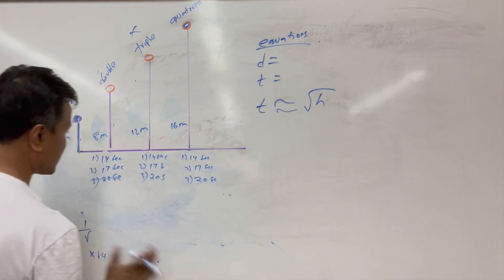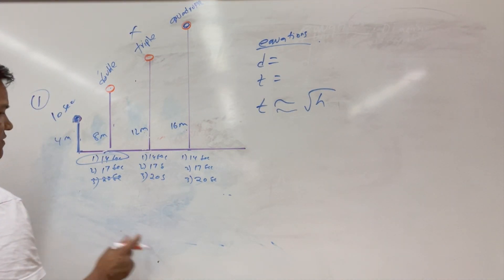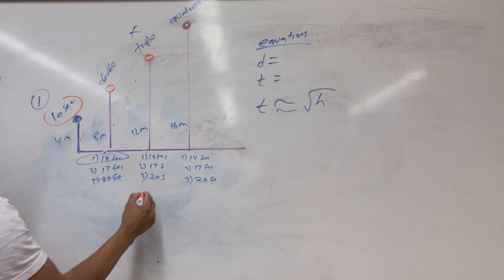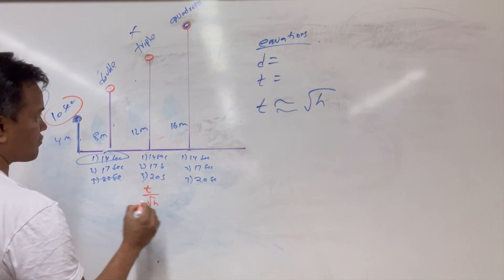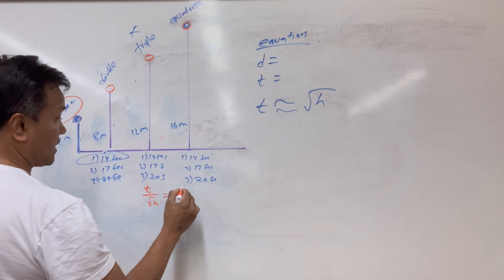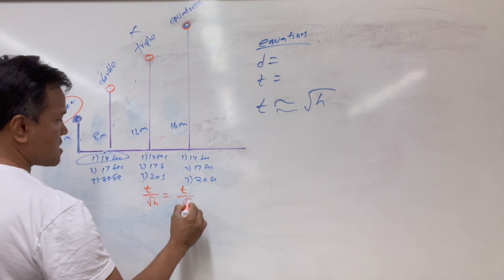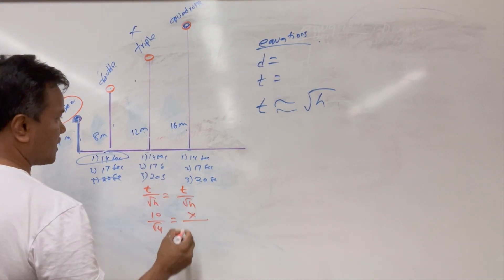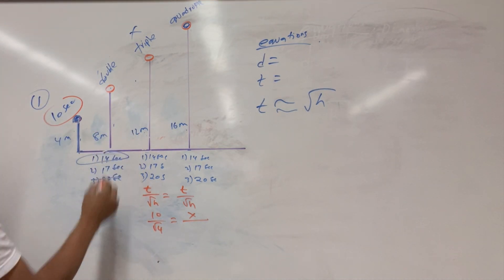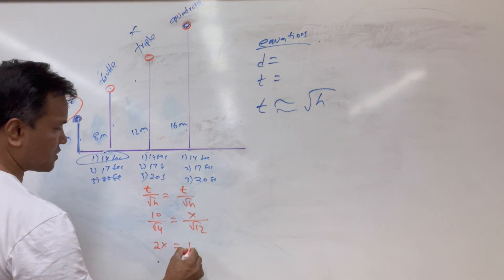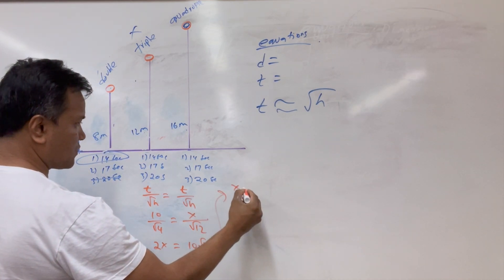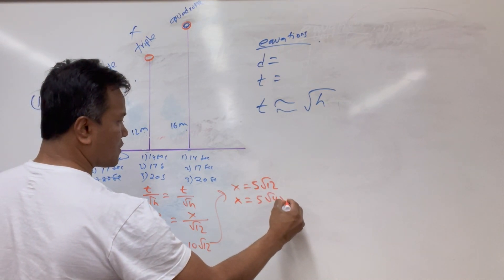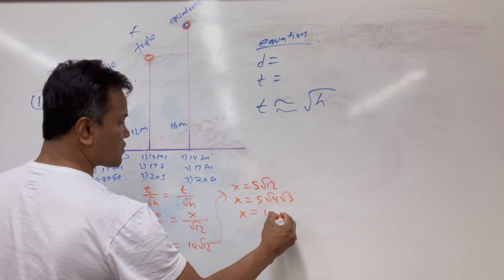Now let's check 17 seconds. Starting from 10 seconds for 4 meters, how much time does it take for 12 meters? Using the proportion: 2x equals 10 times the square root of 12, so x equals 5 times the square root of 12. That simplifies to 5 times 2 times the square root of 3, which equals 10 times the square root of 3 — approximately 17 seconds. So you triple the distance to get 17 seconds.